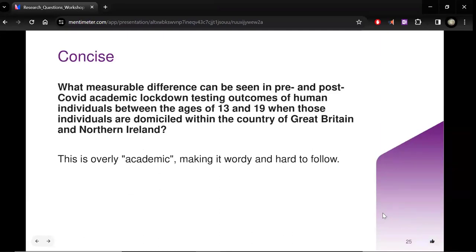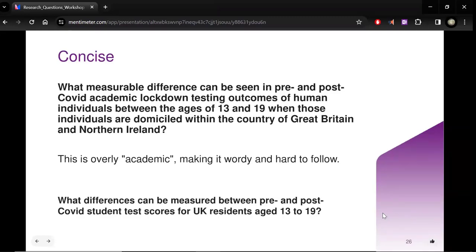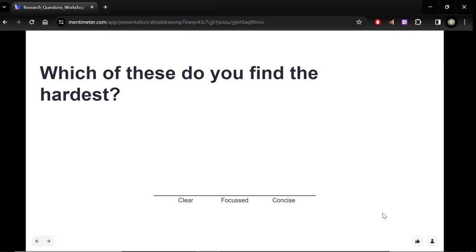So a more focused question would be, what effect have UK government green grants had on heat pump installations since 2008? Clearly, this is more focused. It's the kind of thing you might be able to answer in six months to a year. Whereas the original way that this was phrased, you might struggle to answer that in a career. Concise. This one's a little bit silly. So what measurable difference can be seen in pre- and post-COVID academic lockdown testing outcomes of human individuals between the ages of 13 and 19 when those individuals are domiciled within the country of Great Britain and Northern Ireland? Obviously, this is overly academic. And the effect of that is it doesn't make it seem more clever or more intellectual. It just makes it hard to follow. So a much more concise version would be, what differences can be measured between pre- and post-COVID student test scores for UK residents 13 to 19? It's the same basic question. It's just in a more concise way. Any comments, Nigel? Because otherwise, I will just take a poll on which people find the hardest.